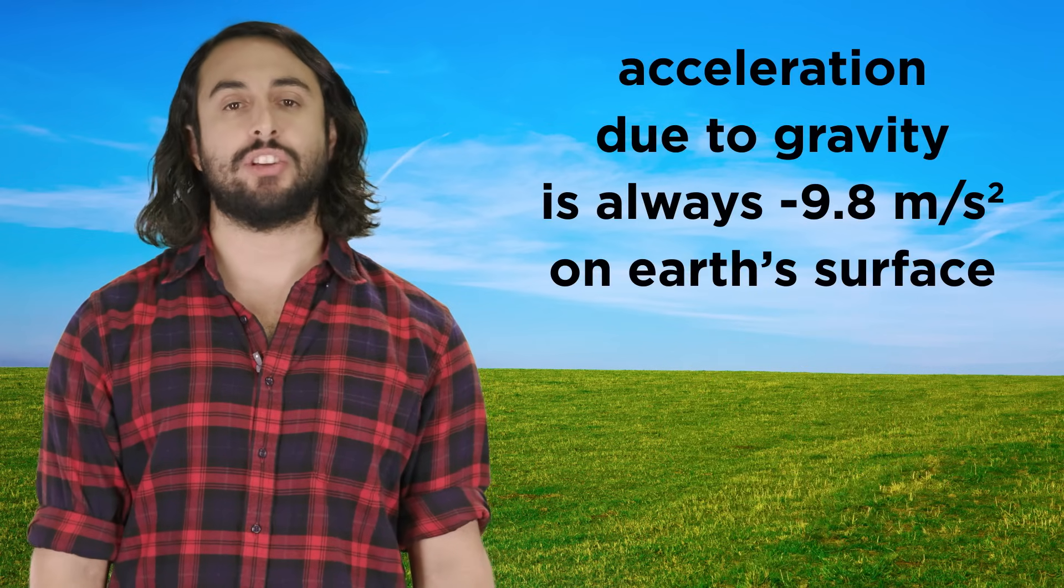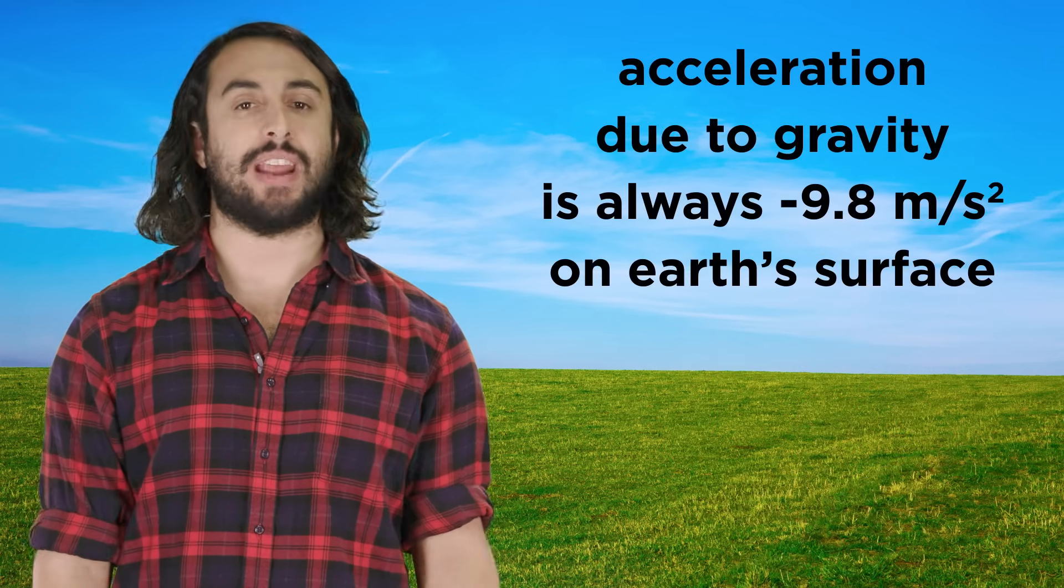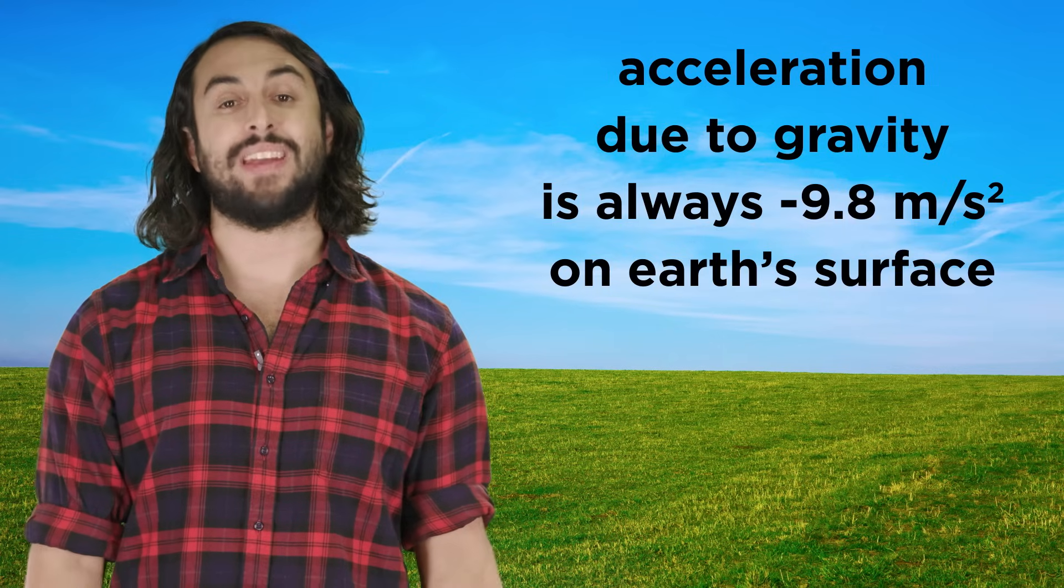We can examine objects that are in free fall, which means they were dropped downwards from a standstill, or we can look at objects that have some initial upward velocity. Either way, acceleration will always be negative 9.8 meters per second squared when on earth.